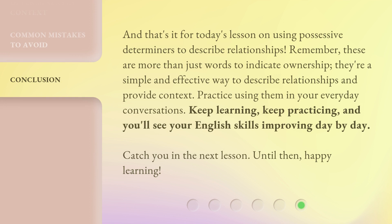And that's it for today's lesson on using possessive determiners to describe relationships. Remember, these are more than just words to indicate ownership — they're a simple and effective way to describe relationships and provide context. Practice using them in your everyday conversations. Keep learning, keep practicing, and you'll see your English skills improving day by day. Catch you in the next lesson. Until then, happy learning.